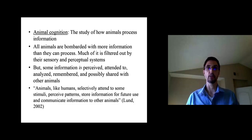So animals, just like humans, have perceptual systems and sensory systems that guide them to process only certain information in the environment. So some information is perceived, some information is attended to, analyzed, remembered, and possibly shared with other animals. So many animals communicate with each other, sharing information.